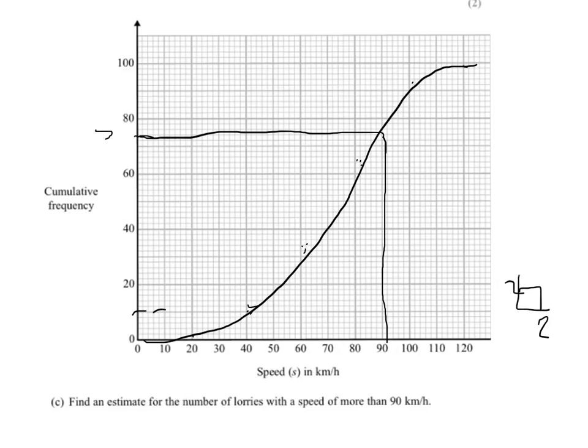Now that's 74 up to 90. It's 100 altogether, so it's going to be 26 from the line to the top. Another 26. That's the difference between 100, the total number of drivers, and 74, the number we estimate to be driving up to a speed of 90 kilometres.